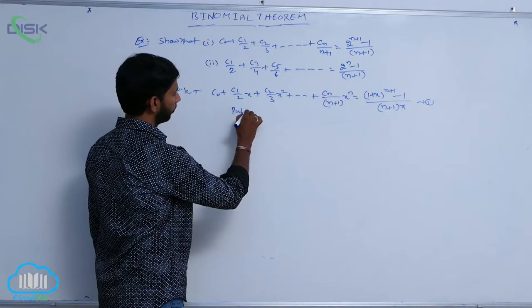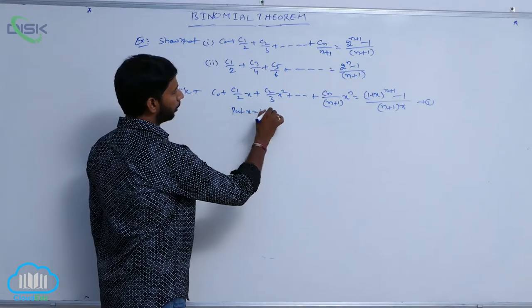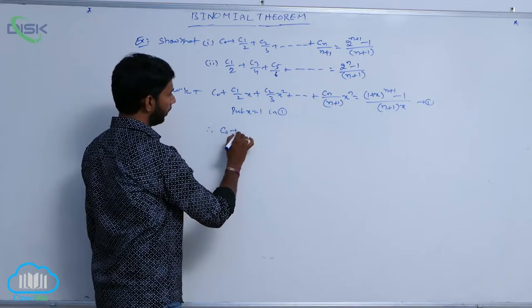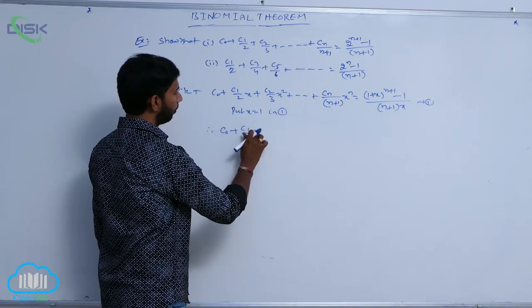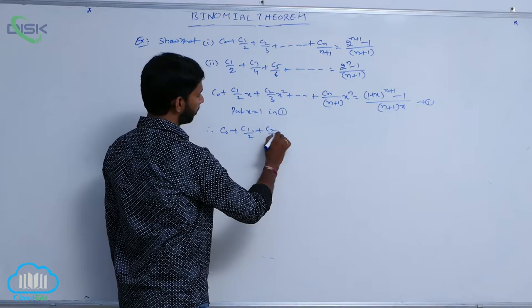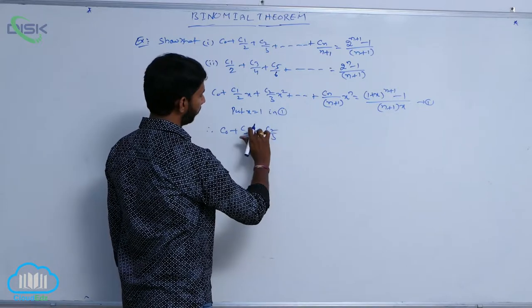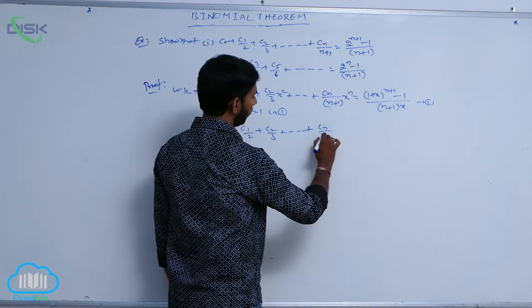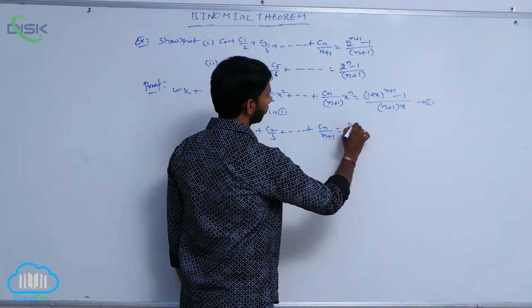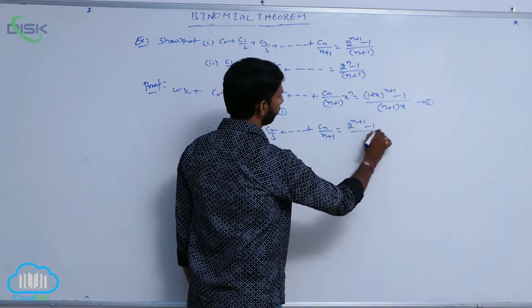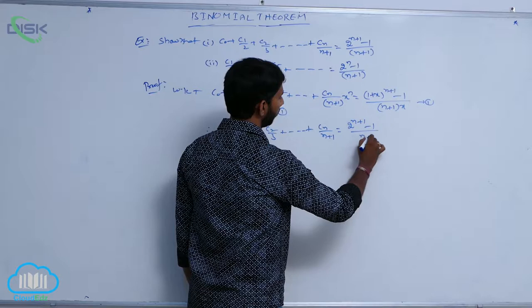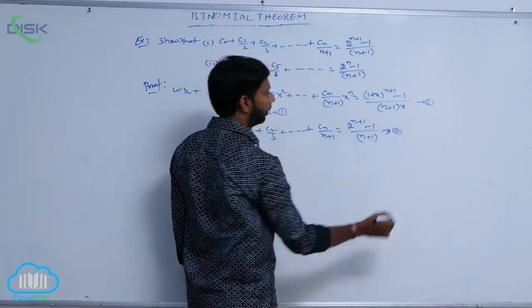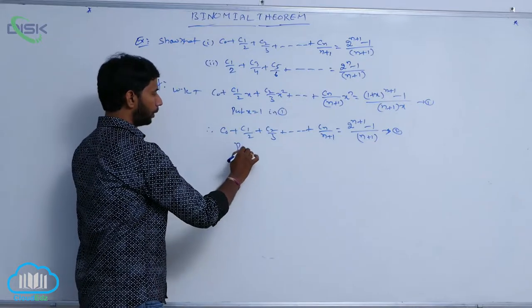Put x = 1 in condition number 1. Therefore, C₀ + C₁/2 + C₂/3 + ... + Cₙ/(n+1) = (2^(n+1) - 1)/(n+1). Consider this as condition number 2.